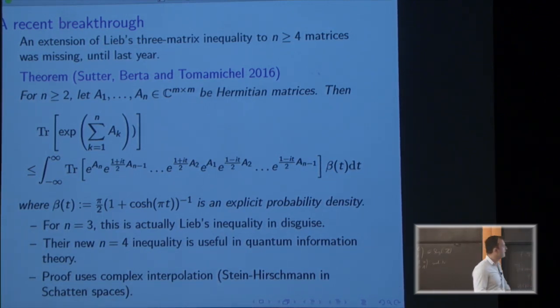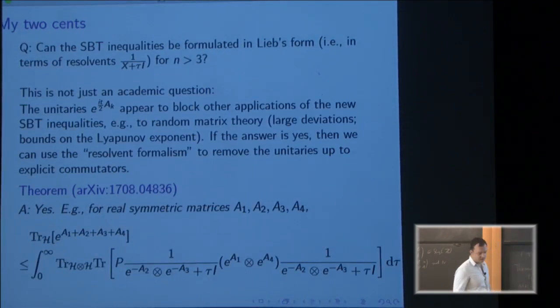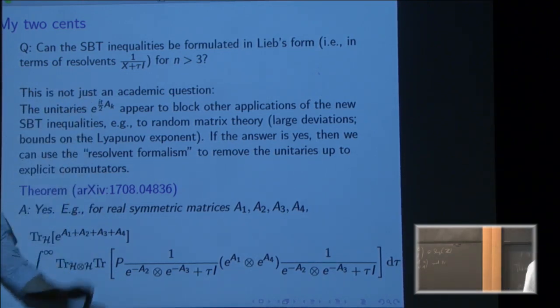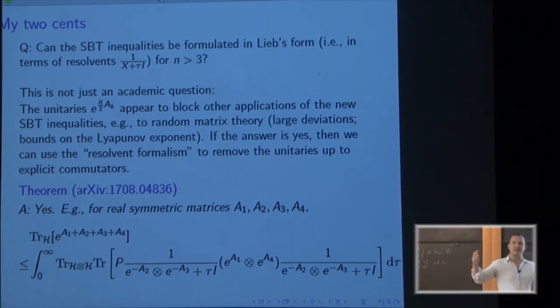Okay. So now I want to talk about the relation between these two things. So we have this one with all the complex phases and this parameter beta and this one with the resolvents. Okay. And so the question is now, is there a form of these, I call them SBT. This was the big inequality with the complex numbers on the last slide. Is there a form of these inequalities that uses resolvents for n bigger than three? Can it be rewritten as an n bigger than three generalization of this inequality by Lieb? And this is not just an academic question for basically for the reason in a nutshell that resolvents are nicer objects to work with than complex matrix powers. Resolvents, we have lots of algebraic identities for their commutators or for their perturbations. They're really nice objects to work with.